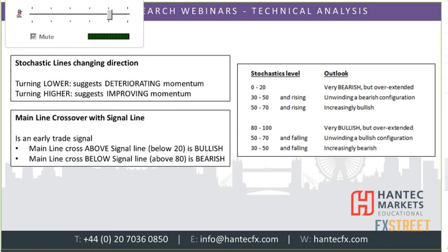What does stochastics show you? At the most basic level, falling stochastics suggest deteriorating momentum, and rising stochastics suggest improving momentum. There are instances where the stochastics turn lower — you could trade that in terms of thinking about a change of direction to the downside — and when they start to turn higher, you'd think about the direction of trade starting to move to the upside. You also get crossovers where the main line crosses with the signal line, giving you buy and sell signals depending on the direction and the level.